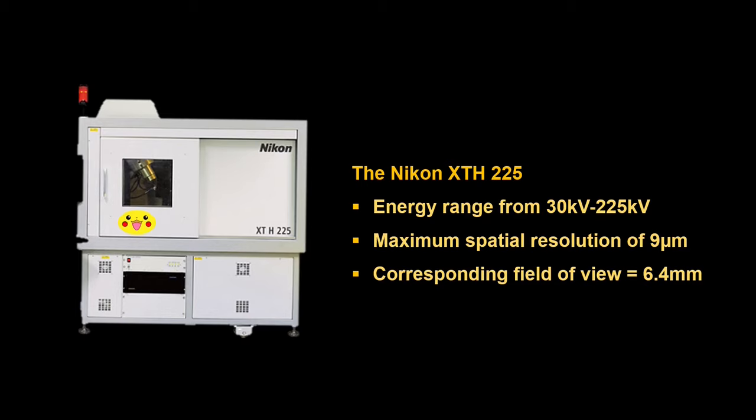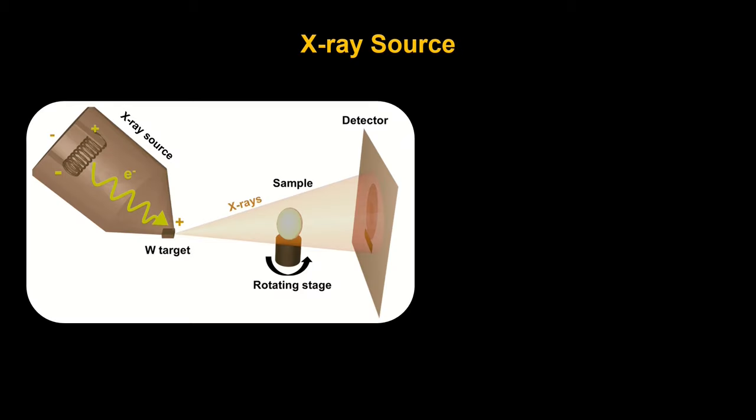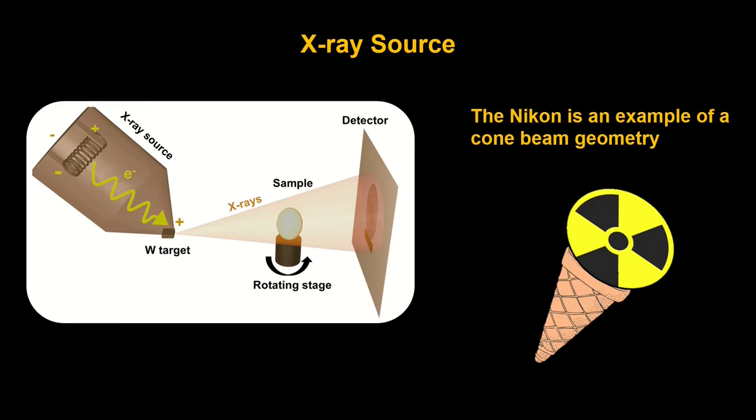If we strip the Nikon down to its core parts, we would be left with these three essential components. You've got the X-ray source, you've got the detector, and you've got the sample on a rotating stage in between them. We've talked about the X-ray source a bit in the last lecture on the basics of X-rays. The Nikon is an example of cone beam geometry. This is a natural geometry for a divergent beam. You have the X-rays produced at that tungsten target, and then they are emitting out at various angles towards the sample.